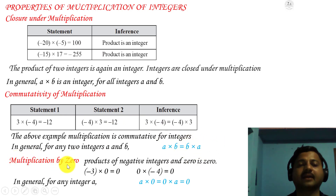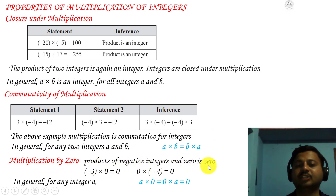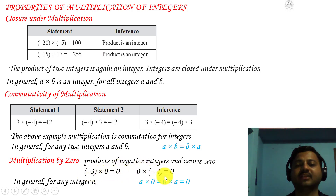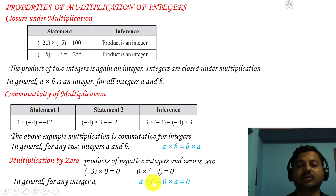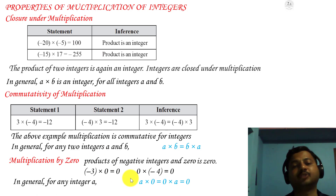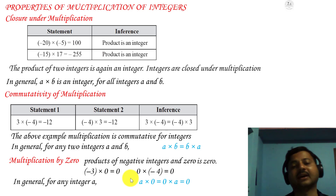Multiplication by zero: the product of any negative integer and 0 is 0. If you multiply any negative integer by 0, you get 0. For example, minus 3 into 0 is 0, and 0 into minus 4 is 0. In general, for any integer a: a into 0 equals 0 into a equals 0.